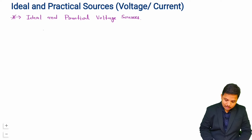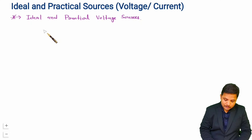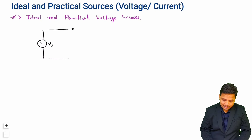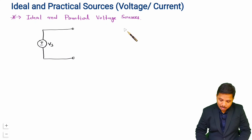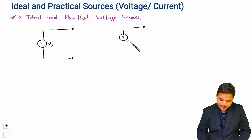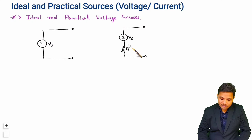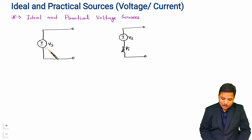I will explain ideal voltage sources by diagram. In an ideal voltage source, there is no internal resistance. Its equivalent circuit has just the voltage source Vs. When we talk about a practical voltage source, in series with the voltage source there will be an internal resistance Ri. So its equivalent circuit has Ri in series with Vs, while the ideal voltage source has only Vs.